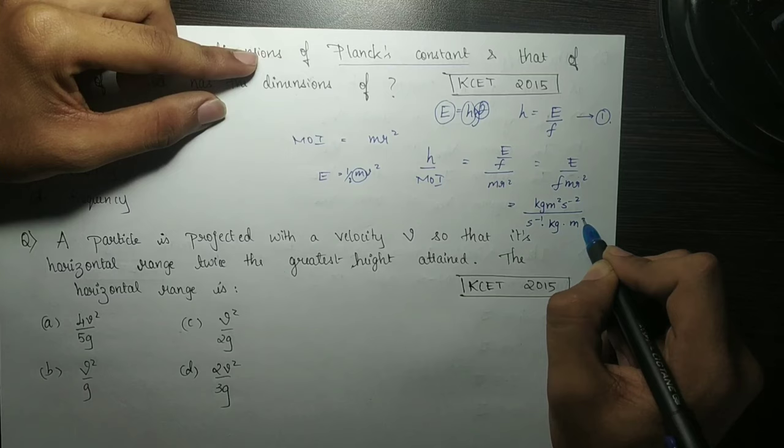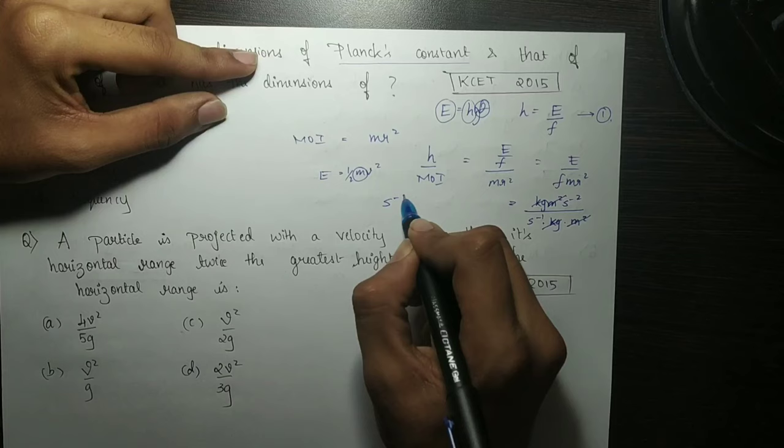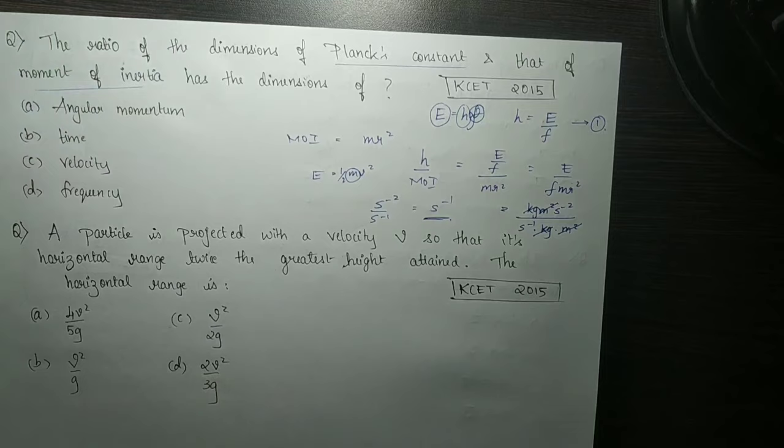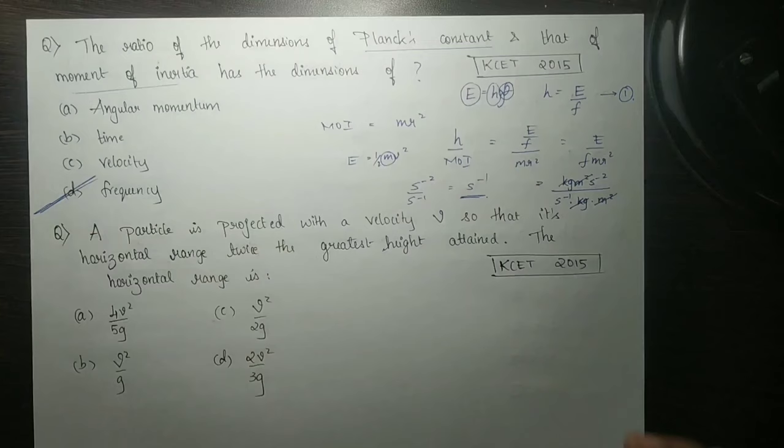kg m squared per second squared divided by frequency per second, kg m squared, m squared. kg m squared second to the power minus 2, divided by second to the power minus 1. Frequency. So next question.